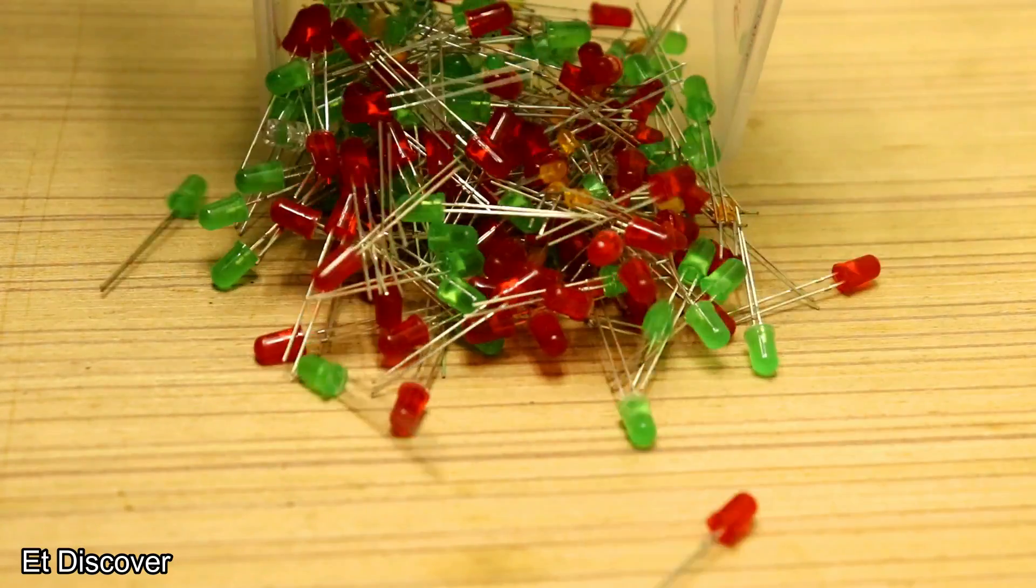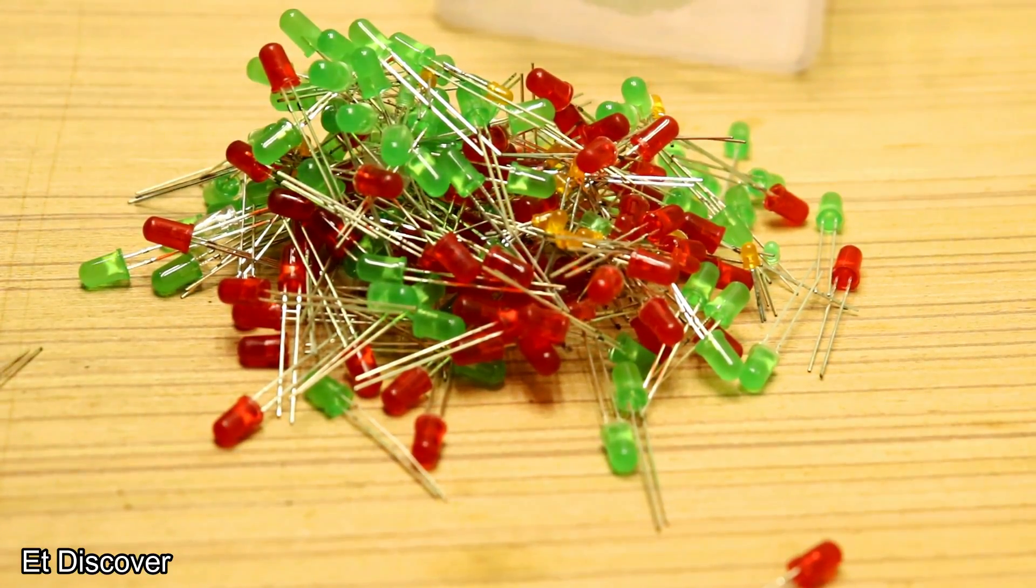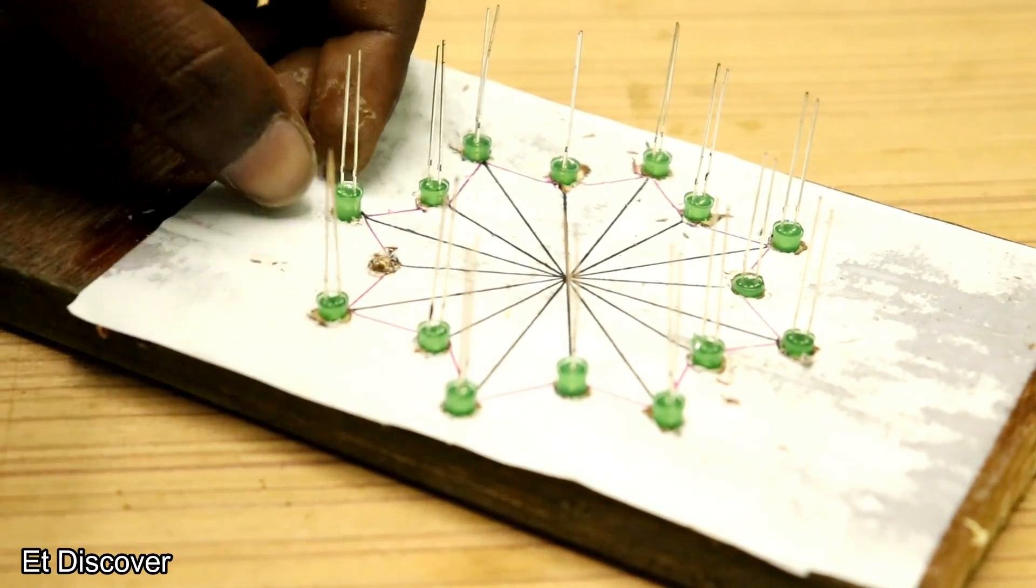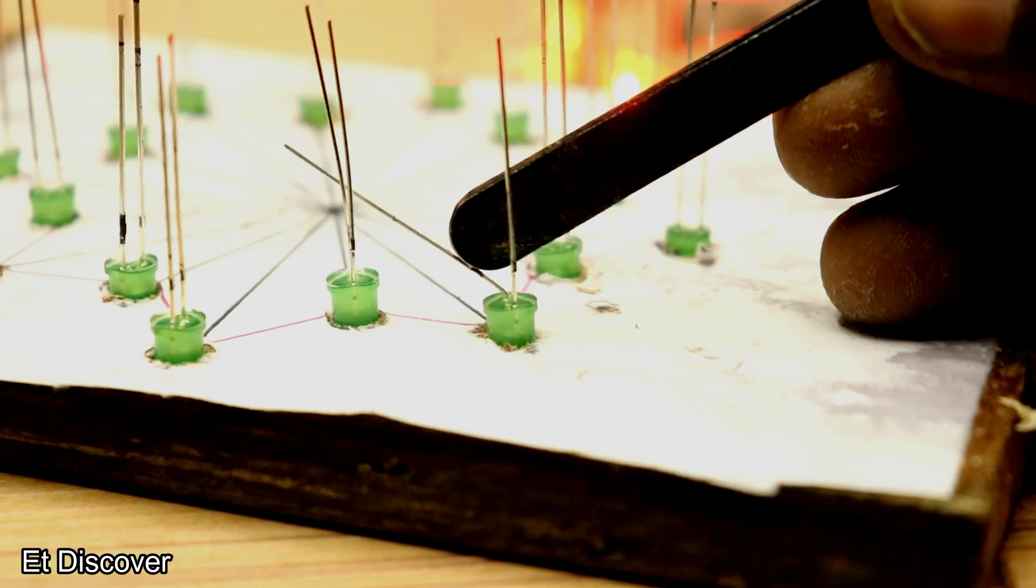And you need 128 green LEDs to complete this project and 5 red LEDs. Now I put those LEDs one by one in the holes and bend the pins and solder them together.